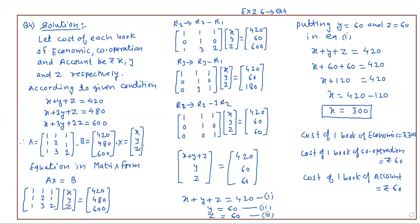Now, the equation in matrix form is the same method as I taught earlier. The equation in matrix form is A times X equals B.